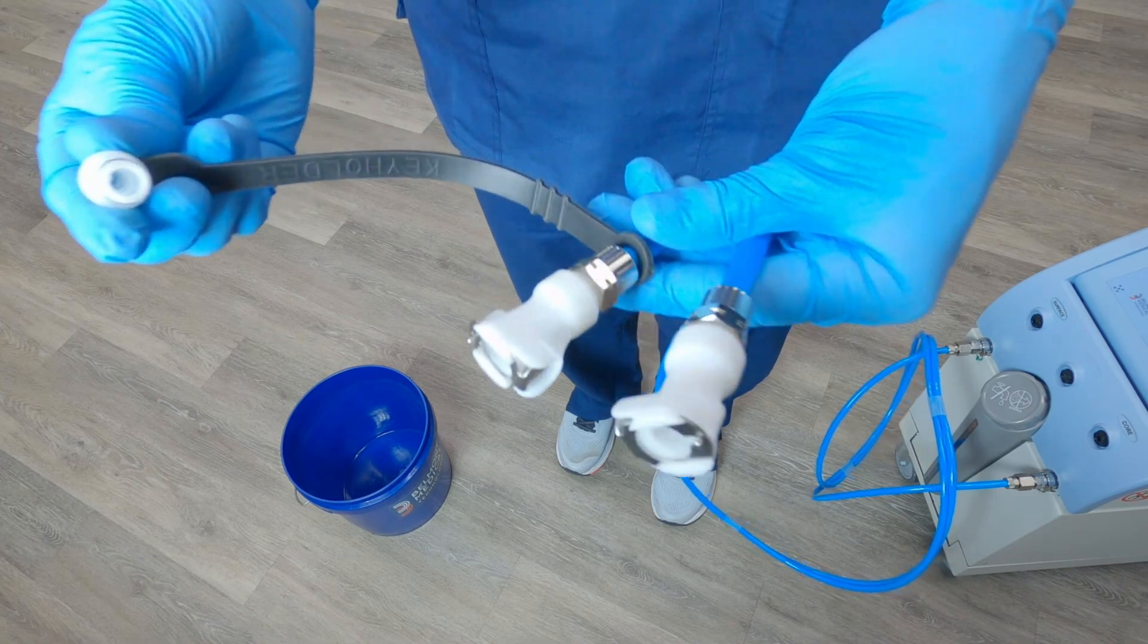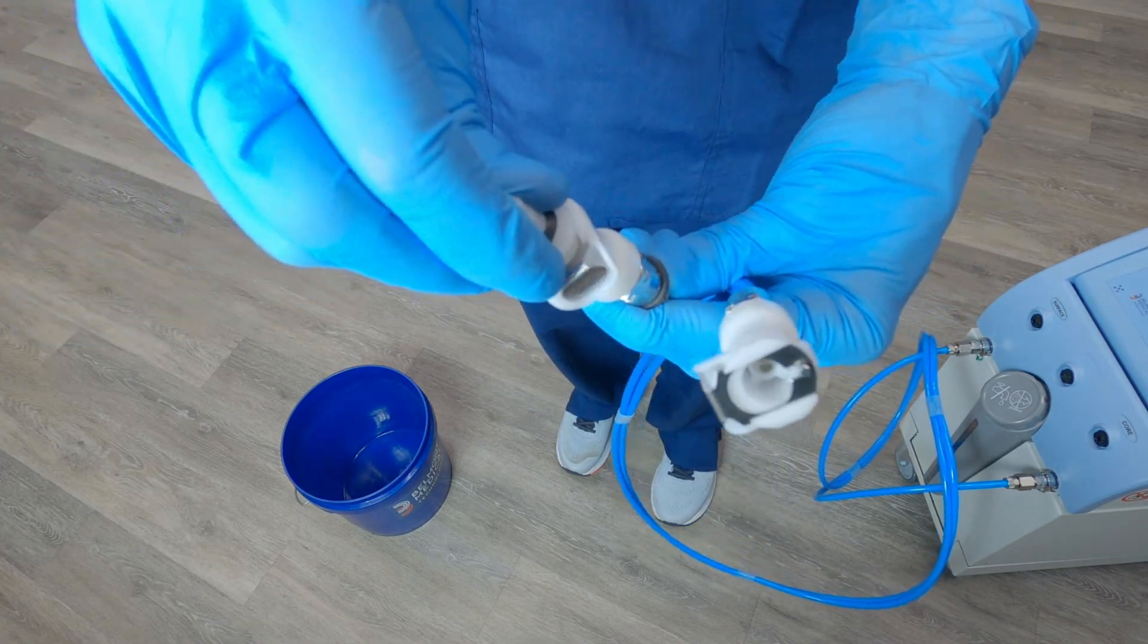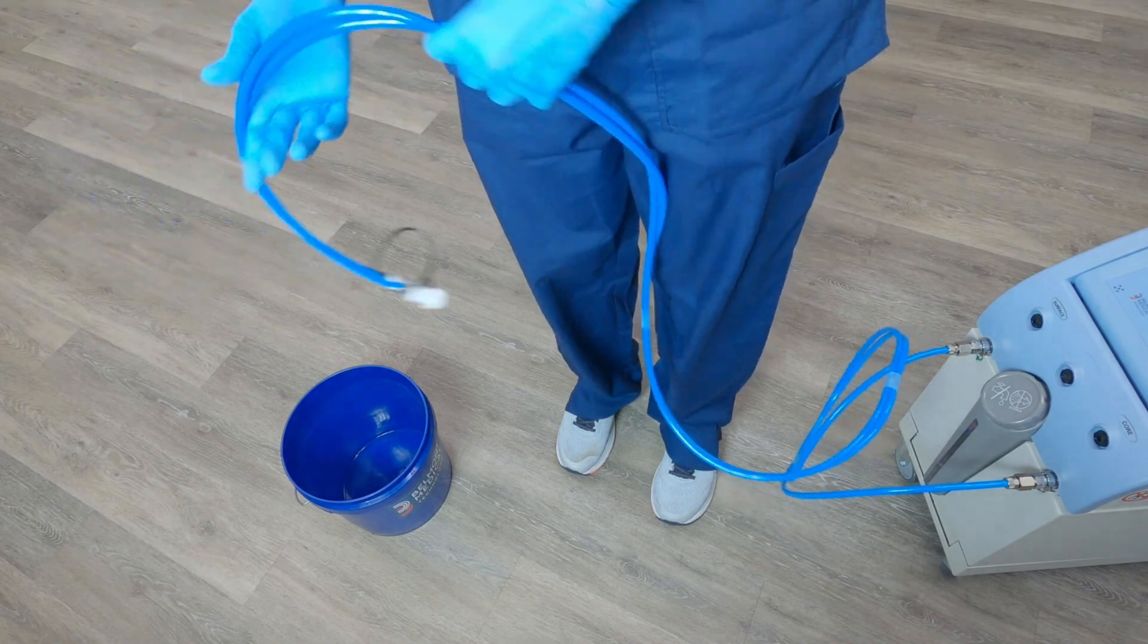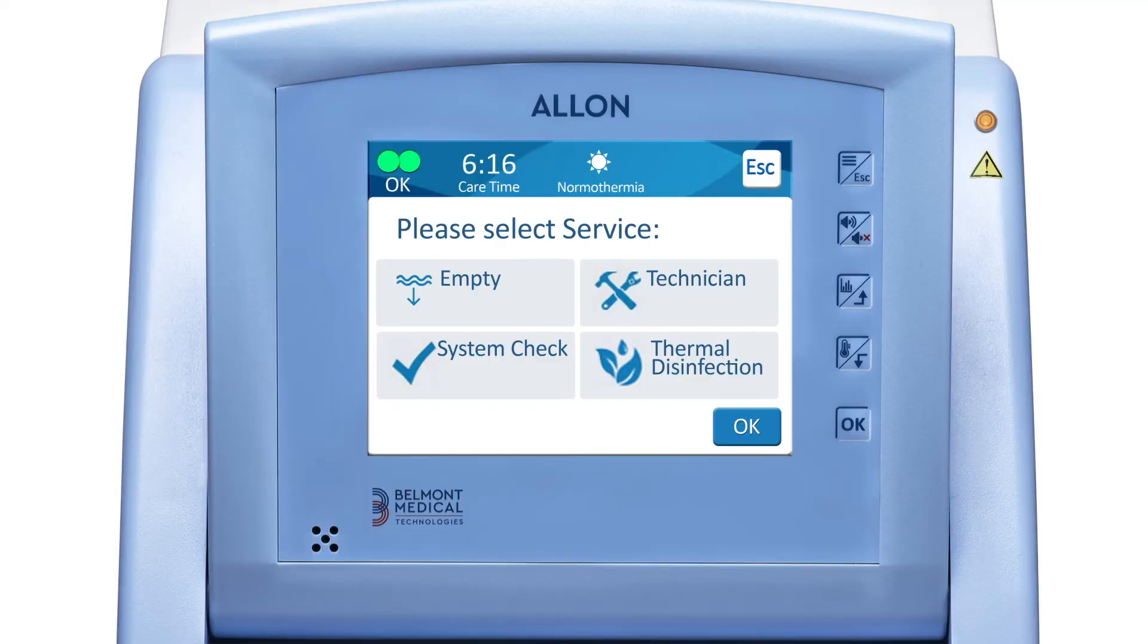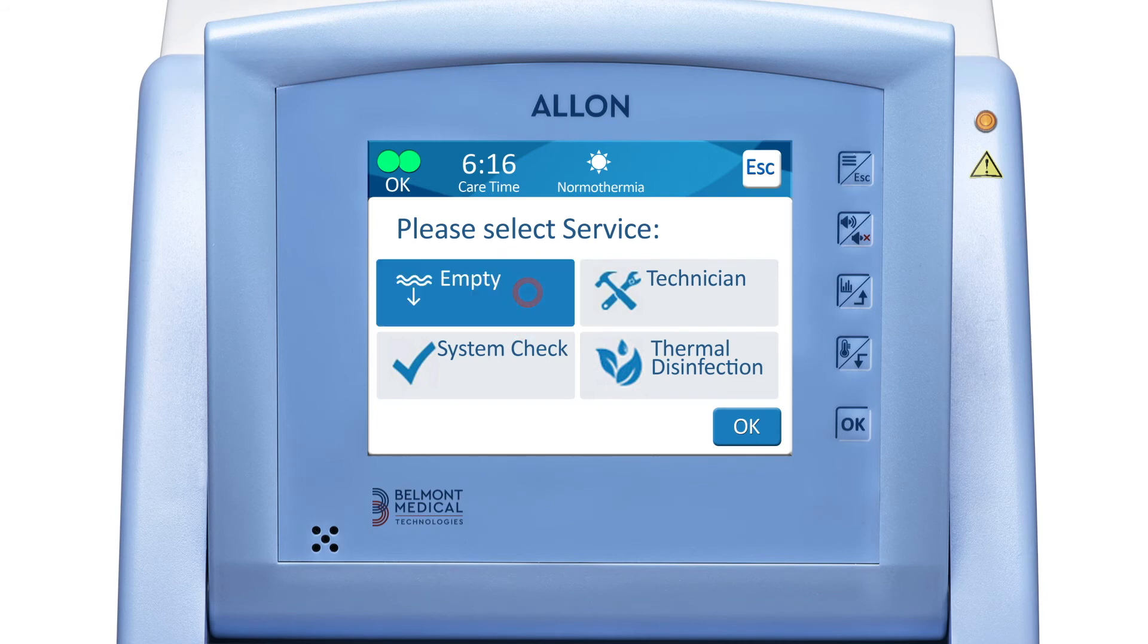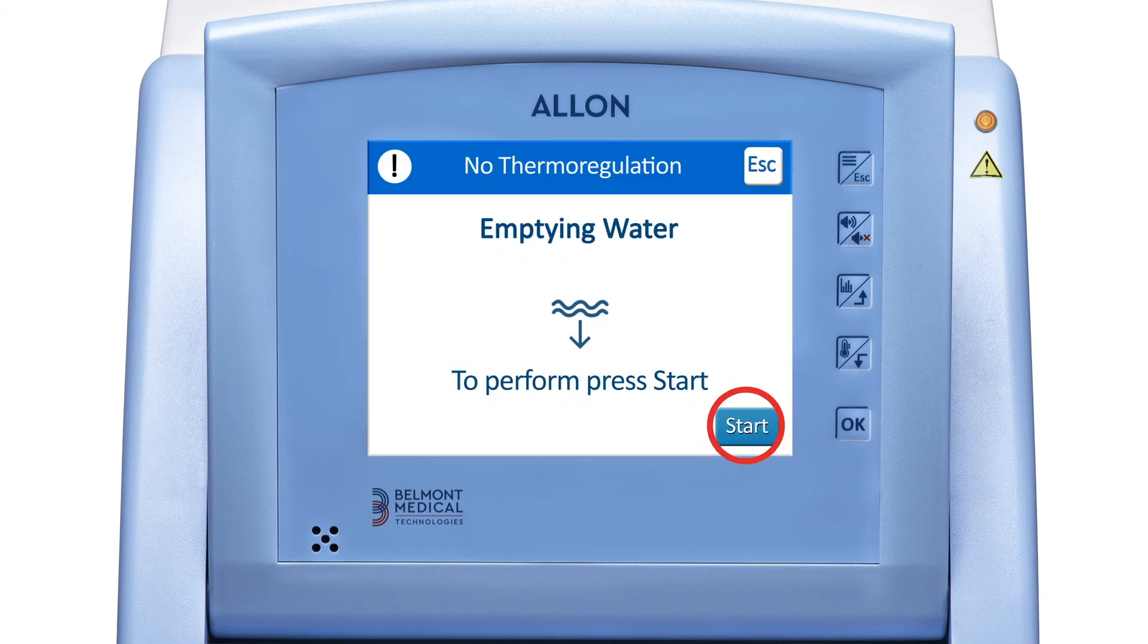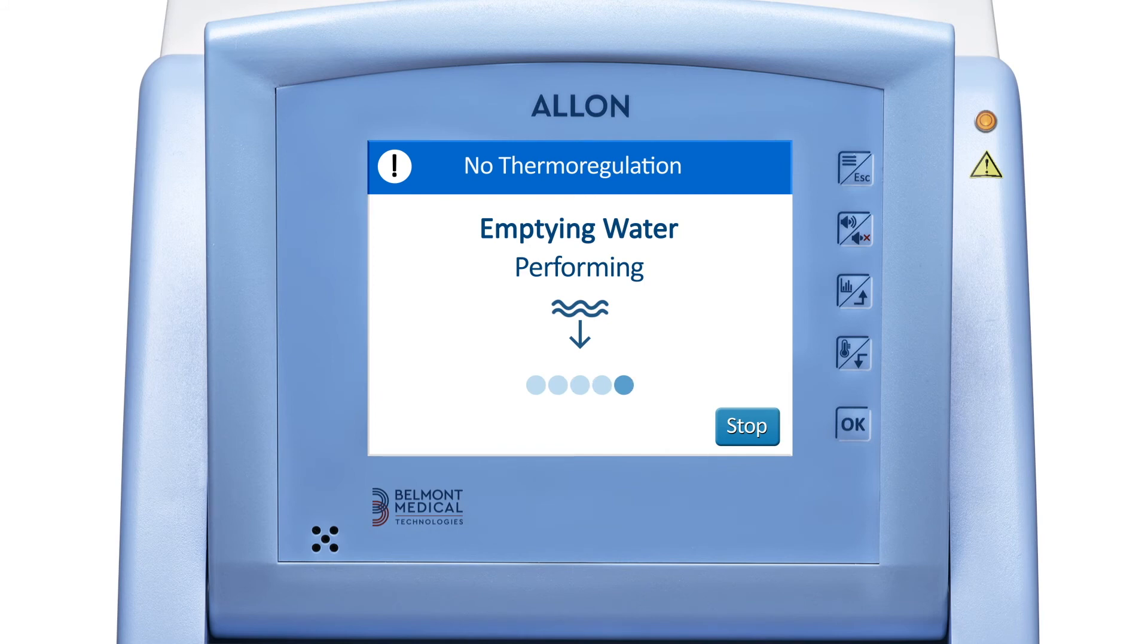To empty Alon, insert the draining connector into the water out on the plastic end of the hoses and aim the draining connector into a sink or bucket. Navigate to the service screen and then press empty. Press start when you're ready to begin. Alon will inform you when it has completed the emptying cycle.